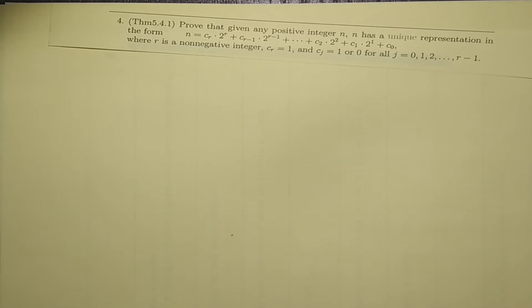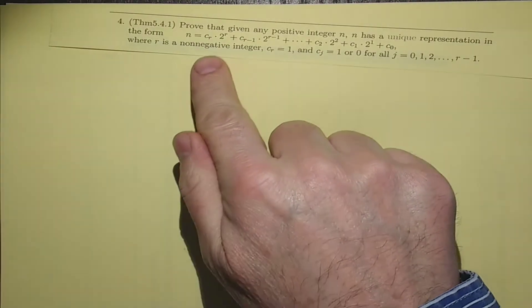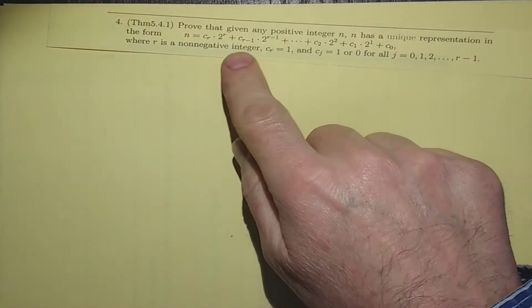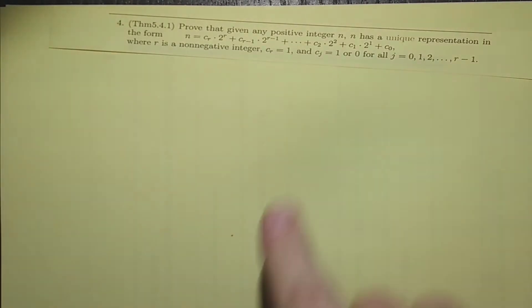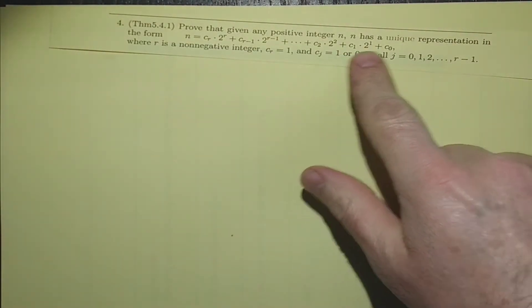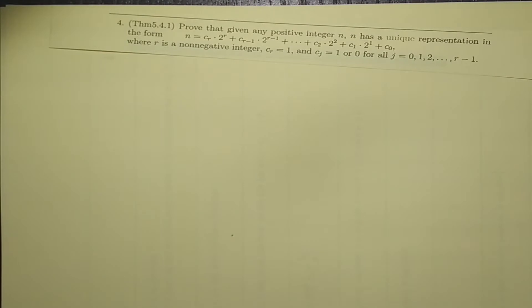Theorem 5.4.1 proved that any given positive integer n has a unique representation in the form of a number times the power of 2 plus a number times a smaller power of 2, all the way down to 4 times 2 times 1. And r is a non-negative integer. C of r equals 1 or 0 for each of these. So this is really the binary representation of the number.